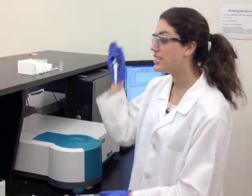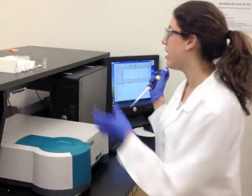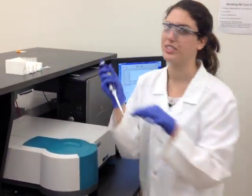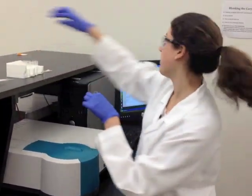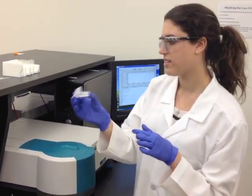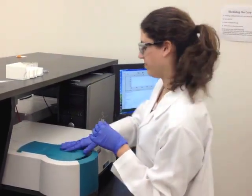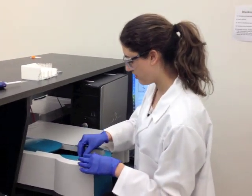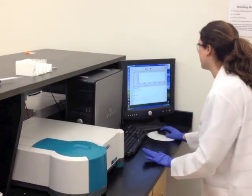I'm taking 10 microliters of the riboflavin binding protein and putting it in the neutral red solution. Now I'm going to mix it with parafilm and put it in the spectrophotometer. And press start.